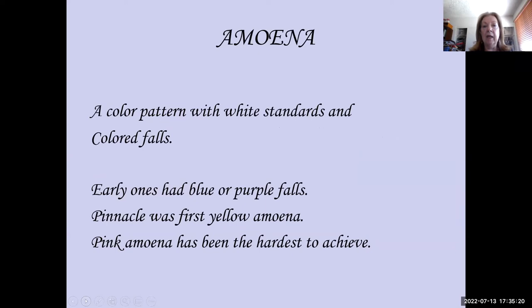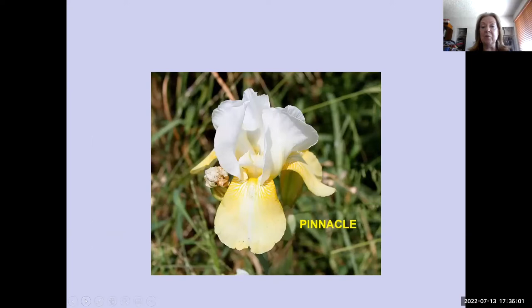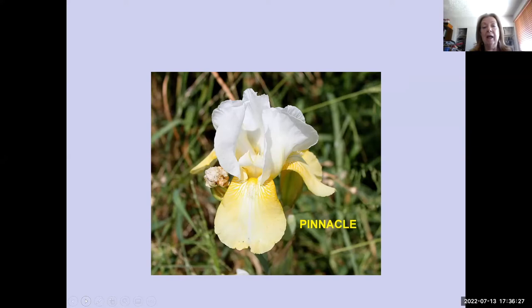I have pictures here not just of tall bearded, but of medians, Louisianas, spurias — they're throughout the entire classes of iris. The first one, beginning with A, is the amoena pattern. This is in the judge's handbook. It is a color pattern with white standards and colored falls, any color. Early ones had blue or purple falls, and Pinnacle was the first yellow amoena. The pink amoena has been the holy grail for Barry Blythe for his entire hybridizing career. This is a picture of Pinnacle, the original yellow amoena, which I grow in my garden.